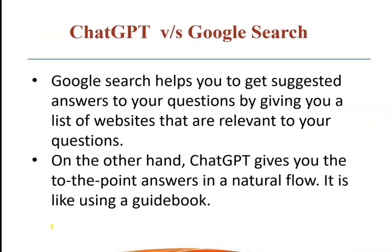If we talk about ChatGPT versus Google Search, both do similar work. In ChatGPT, you write whatever you need — material, stories, content. Google Search helps you with answers and suggests a list of relevant websites. On the other hand, ChatGPT answers to the point in a natural flow.